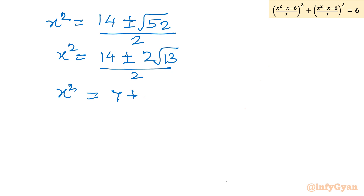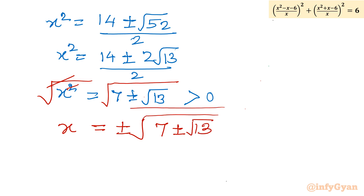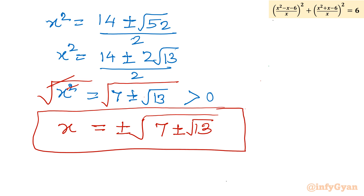By the same logic as before, both values 7 + √13 and 7 - √13 are positive, so we can take the square root of both sides. Therefore x = ±√(7 ± √13). This is our final answer. I hope you liked this video — thank you so much for watching. Do not forget to like, share, and subscribe. Bye bye till next video, good luck.